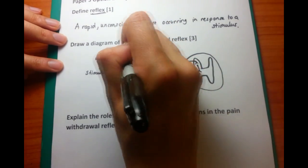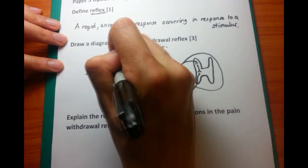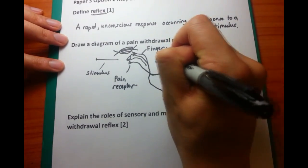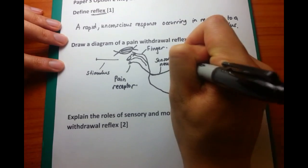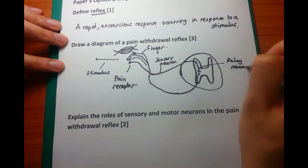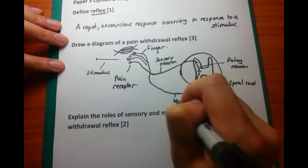And this is just like another neuron that it connects to before synapsing with the motor neuron. So while I label the sensory neuron and the relay neuron, then what I'm going to do next is finally talk about the motor neuron.